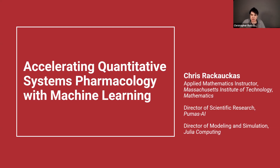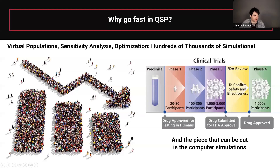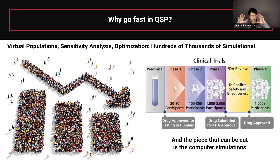One question that always needs to be addressed is: why do we need just pure, unadulterated speed? Well, the reason is because whenever anyone talks about virtual populations, sensitivity analysis, or doing optimization of parameters, you're really talking about hundreds of thousands of simulations over a huge parameter space.